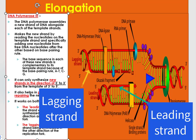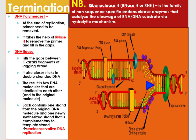The leading strand is the strand which is synthesized in the same direction as the replication fork, whereas the lagging strand is the strand being synthesized in the opposite direction of the replication fork. During the termination phase, DNA polymerase I removes the primer at the end of the replication process, since the primer needs to be removed.